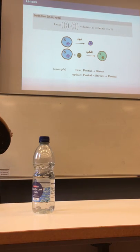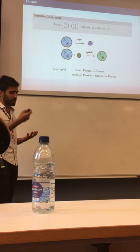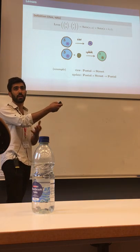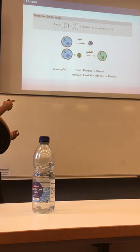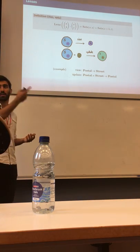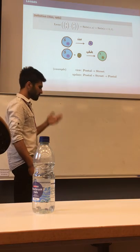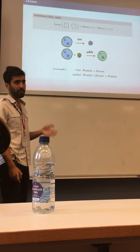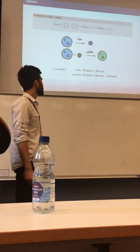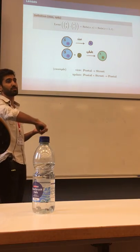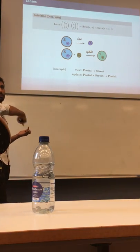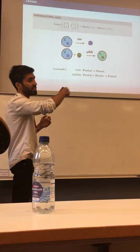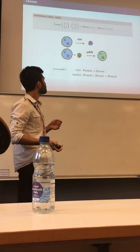Also, if I have a complex data structure and a new subfield that should be put in place of that A, I want to get back a new data structure with that updated subfield. For example, if I have a postal address, one of the fields would be a street. And if I have a postal address and a new street I can update, giving back the same postal address but changing the street for the new one.